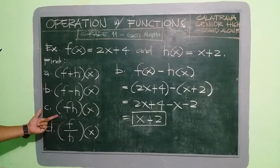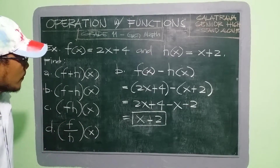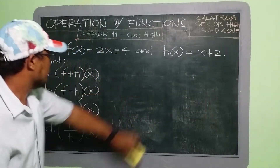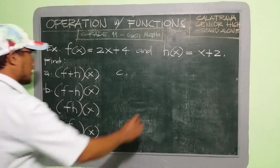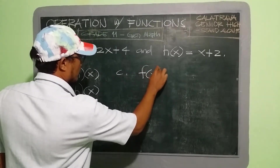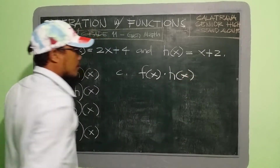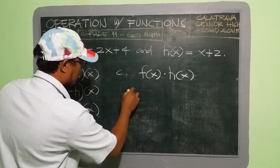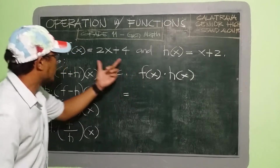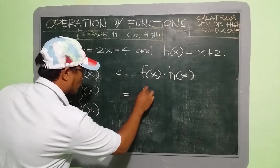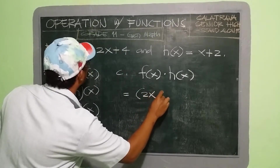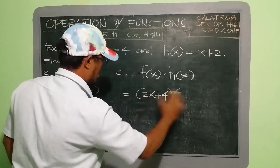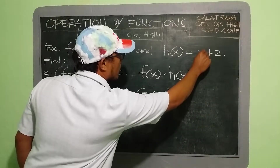Now let us proceed to letter C, which is the product. That is simply f(x) multiplied by h(x). The big dot is the multiplication symbol we're using. We copy f(x) which is 2x + 4, times h(x) which is x + 2, written in parentheses to indicate multiplication.